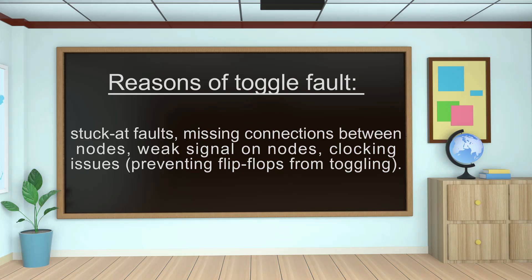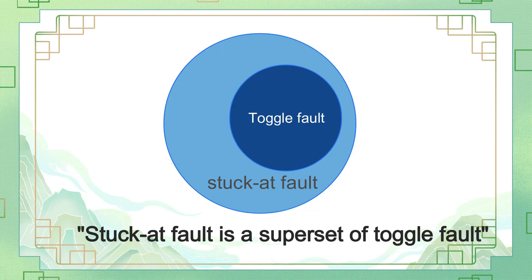What are the reasons that can lead to toggle fault in circuit? Stuck-at faults, missing connections between nodes, weak signals on nodes, clocking issues preventing flip-flops from toggling. Stuck-at fault is a superset of toggle fault. That is, if a node is having stuck-at fault, then for sure it will have toggle fault. But vice versa is not true.